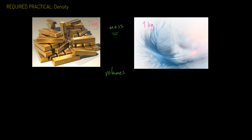We can think of density as being a measure of how compact a material is. Gold is very compact; feathers less so. Even though we're talking about the same mass, we're talking about a different volume — obviously the feathers would take up more room.